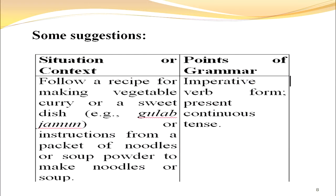Given what I have said, we can offer some suggestions for how it can be done. You can select a situation or context and then relate it to a particular point of grammar. For example, follow a recipe for making vegetable curry or a sweet dish like gulab jamun, or use instructions from a packet of noodles or soup powder. This will help you teach the imperative verb form in English, present continuous tense, etc.